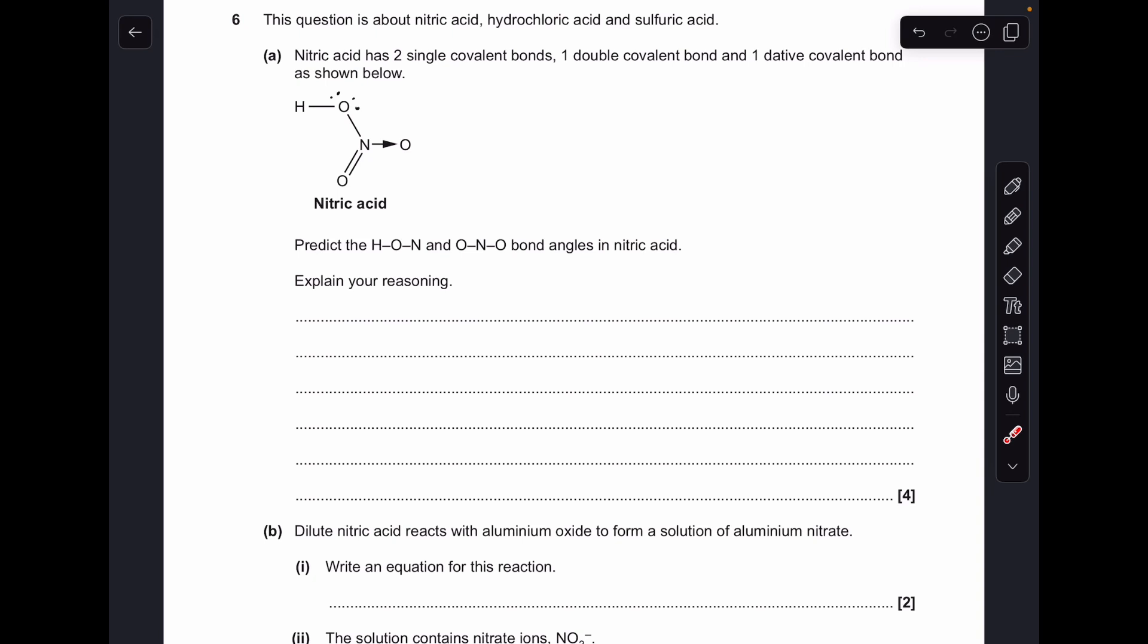Lone pairs repel more than bonding regions, so the starting angle for four regions is 109.5, but we take off five degrees for two lone pairs from that extra repulsion, so we get 104.5 degrees.